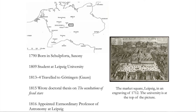While a student he visited Gauss, the greatest German mathematician of the day, to study theoretical astronomy. In 1815 he finished his doctoral thesis, and in early 1816 was appointed extraordinary professor of astronomy at the University of Leipzig, where he stayed for the rest of his life.